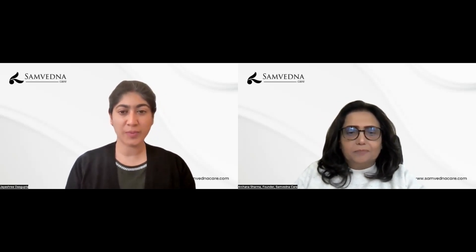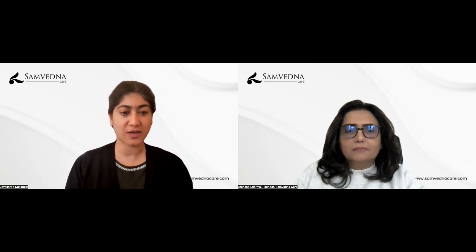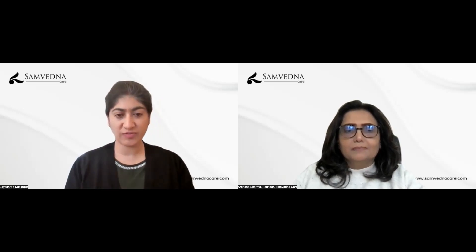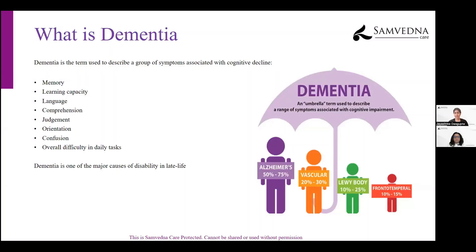One of the questions we're often asked is: what is actually dementia? Dementia is a term used to describe a group of symptoms associated with cognitive decline. It's a syndrome — a group of symptoms that occur together. What we really see is that there's an impact on things that help us to think, make decisions, plan, and do our daily tasks.